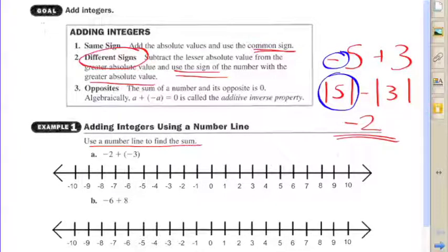Use a number line to find this sum here, and it's negative two plus negative three. Notice they're the same sign. But if you're using a number line,